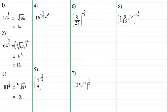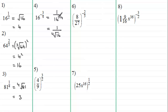Number 4: 16 to the power negative 3/4. When dealing with a negative power, remember this is the same as 1 divided by the positive equivalent, so 1 over 16 to the power 3/4. For 16 to the power 3/4, we first take the fourth root of 16, which is 2, then cube it: 2 cubed is 8. So the answer is 1 over 8.